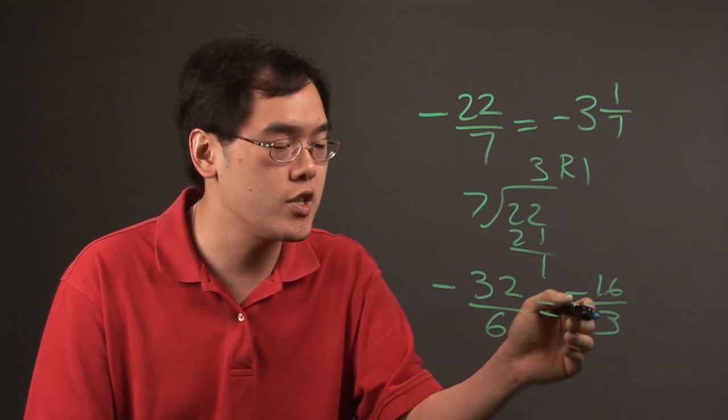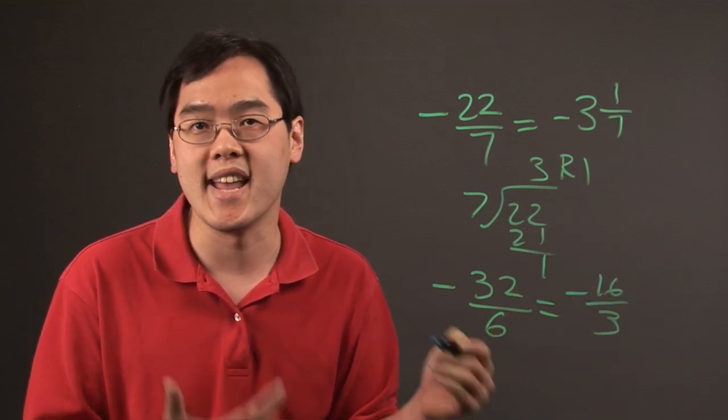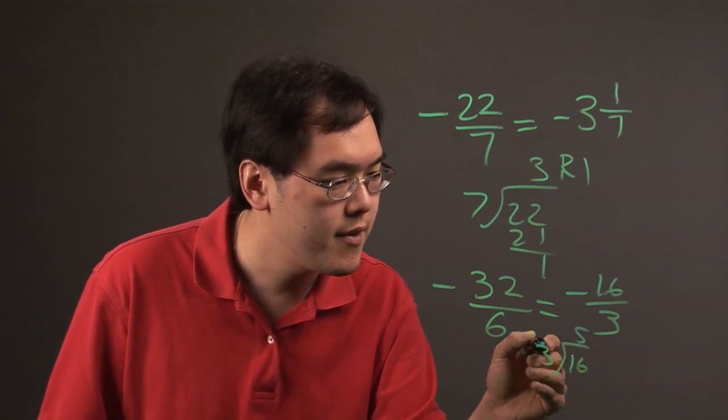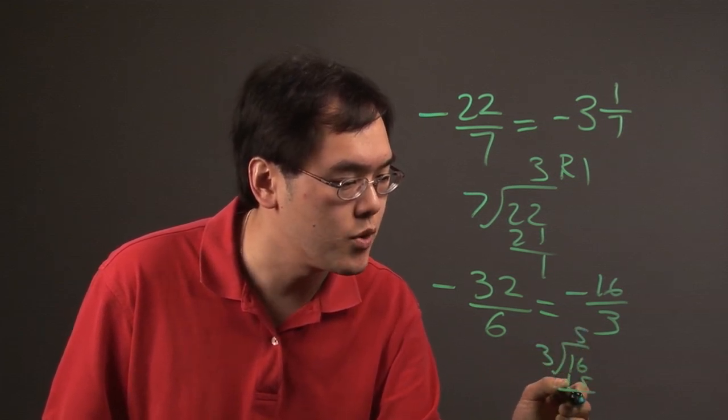And then if you want, you can do the division like we did before and rewrite it as a negative mixed number. So 3 goes into 16, looks like 5 times. 5 times 3 is 15, remainder 1.